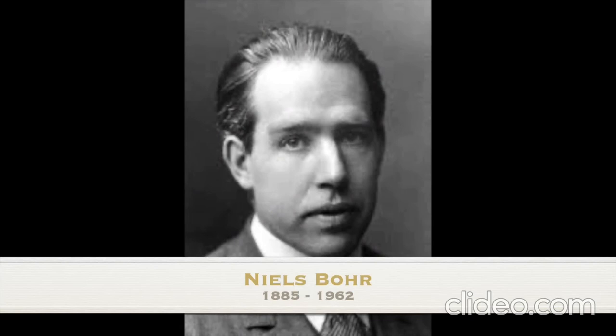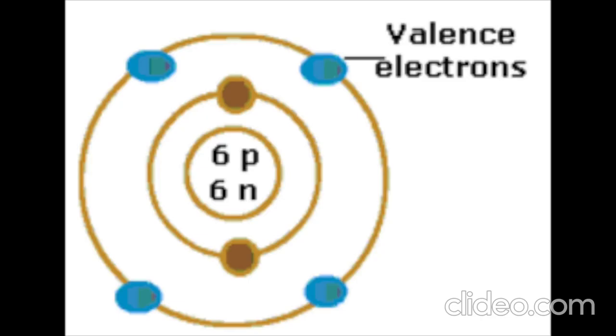Niels Bohr was a Danish physicist. In 1913, he discovered that electrons orbit the nucleus in different orbital rings, and that an element's properties are dependent upon the number of electrons located in its outermost shell.